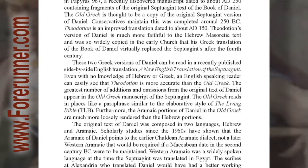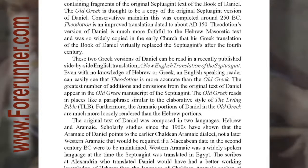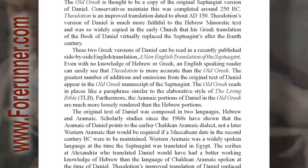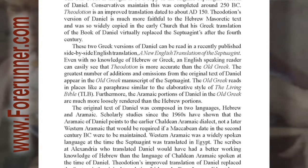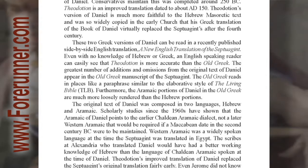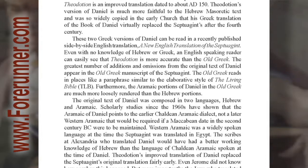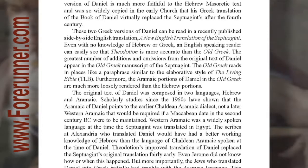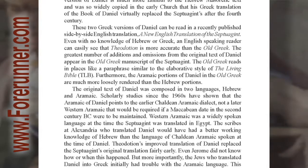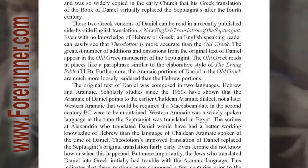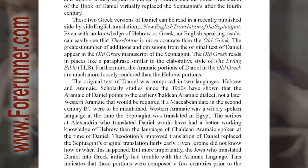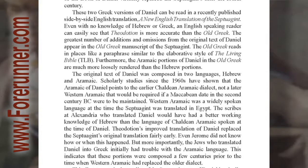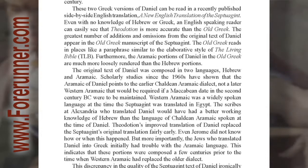Conservatives maintain the original Septuagint was completed around 250 BC. Theodotion is an improved translation dated to about AD 150. Theodotion's version of Daniel is much more faithful to the Hebrew Masoretic text, and was so widely copied in the early church that his Greek translation of the book of Daniel virtually replaced the Septuagint's after the 4th century. These two Greek versions of Daniel can be read in a recently published side-by-side English translation, A New English Translation of the Septuagint. Even with no knowledge of Hebrew or Greek, an English-speaking reader can easily see that Theodotion is more accurate than the Old Greek.